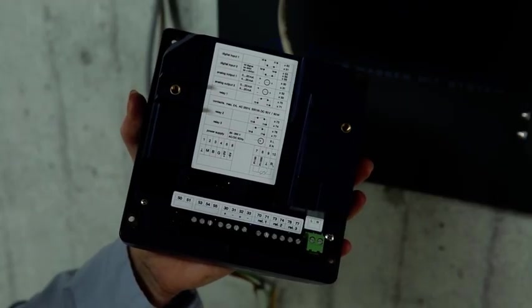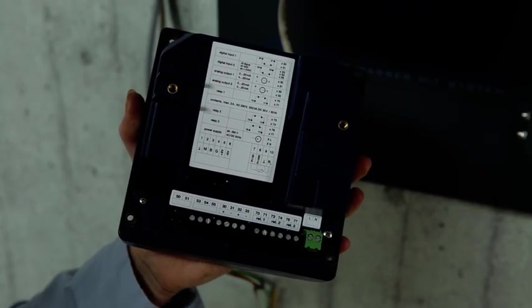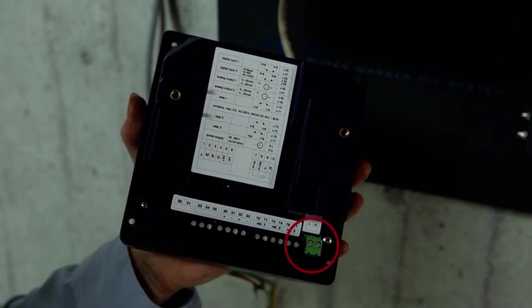The connection diagram can be found on the back of the instrument. It shows the terminals for power supply, dosing and alarm relays, 2 milliampere outputs and 2 digital inputs, as well as the terminals for the sensors.